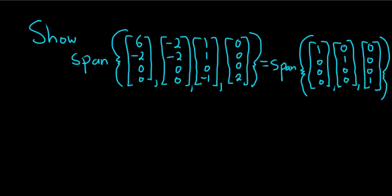And the way we're going to do it is we're going to use properties of spans. So here are the properties. First of all, you're allowed to multiply any of these vectors by any non-zero number. If you have the zero vector, you can drop it.